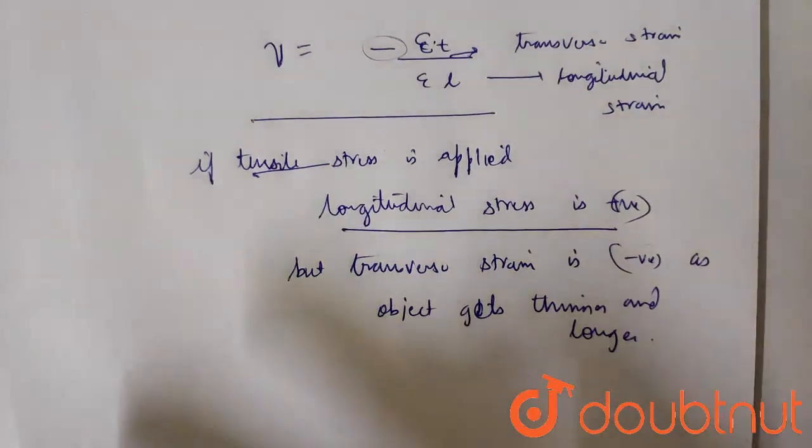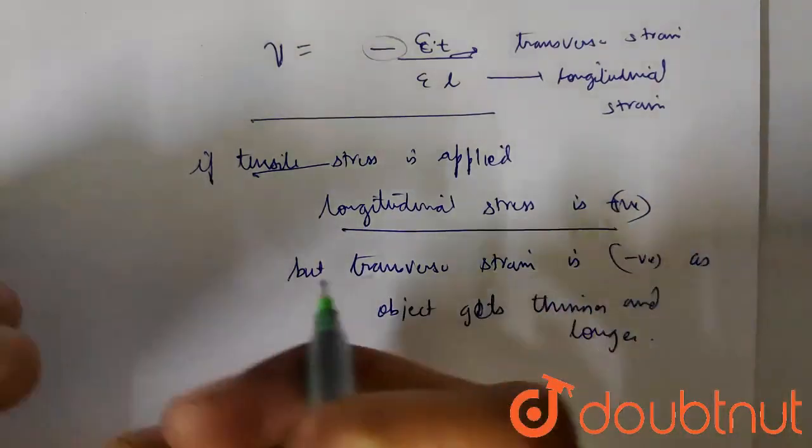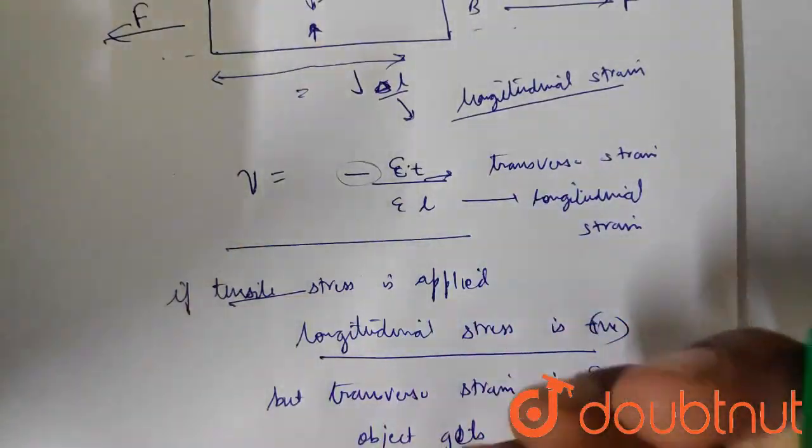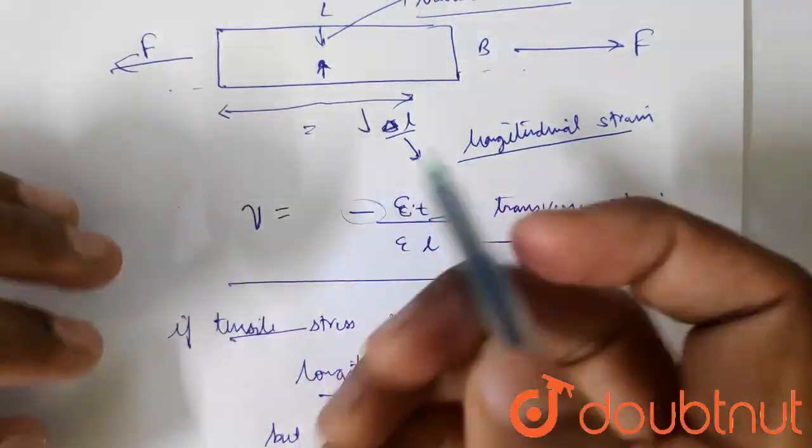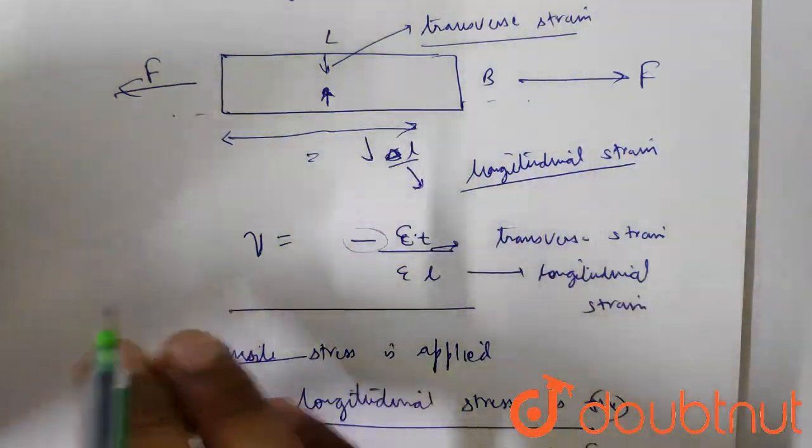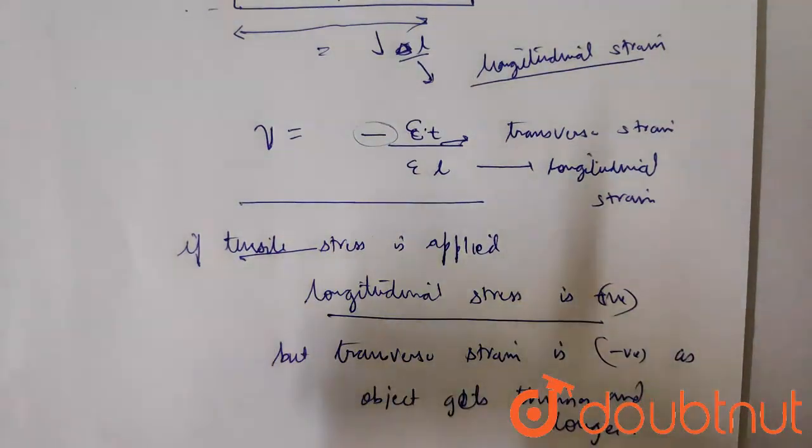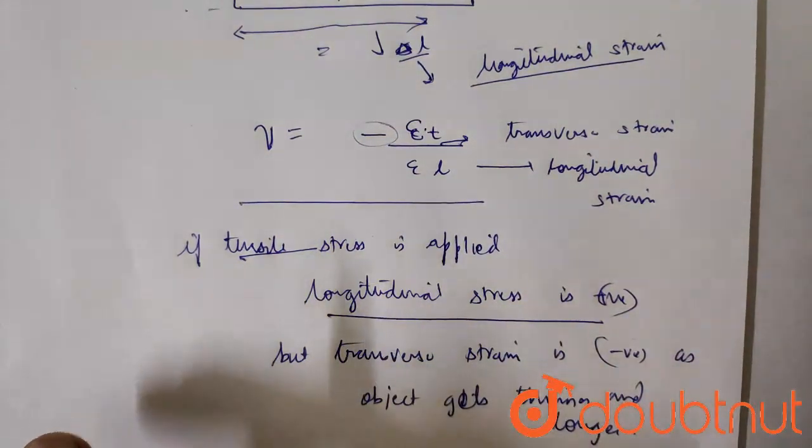For tensile deformation, Poisson's Ratio is positive; for compressive deformation, it is negative. If I apply compressive stress, the length decreases so longitudinal strain is negative, but it gets thicker so transverse strain is positive. They are always opposite, and that is the significance of the negative sign in Poisson's Ratio.